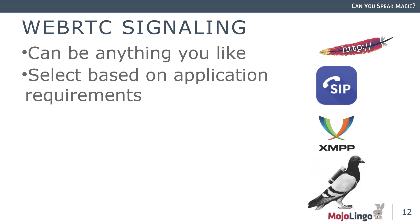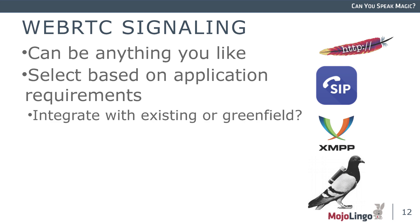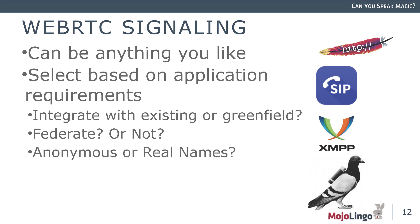You should select signaling based on your application requirements. Some things to consider: should I integrate with something existing, or is this greenfield — can I do whatever I want? Think about the people you have working on it — are these telephony people or web developers? Do I want to federate or not? Is this something I expect to cross organizational bounds, or is this really just private to me? And how much do I care about identity? Is this an anonymous service or do I use real names?